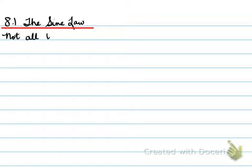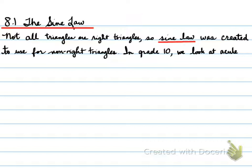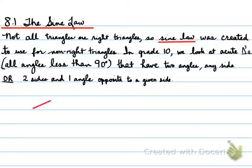Let's look at the sine law that we use for non-right triangles. Not all triangles are right triangles, so sine law was created to use for non-right triangles. In grade 10, we look at acute triangles, all angles less than 90 degrees, that have two angles and any side, or two sides and one angle opposite to a given side.